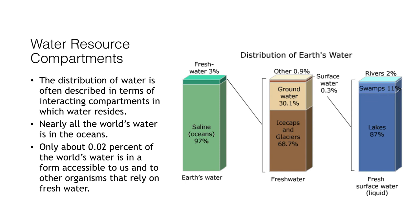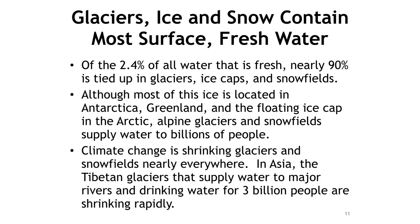What we mainly need, though, is freshwater. Amazingly, only 0.02% of the world's water is in a form accessible to us and to other organisms that rely on freshwater. Of the 2.4% of all water that is fresh, nearly 90% of that is tied up in glaciers, ice caps, and snow fields. Although most of this ice is located in Antarctica, Greenland, and the floating ice caps of the Arctic, alpine glaciers and snow fields supply water to billions of people. The winter snowpack on the eastern slope of the Rocky Mountains, for example, provides 75% of the flow of the Colorado River.